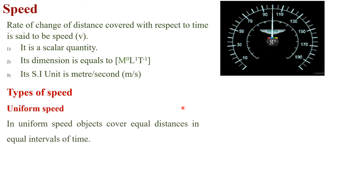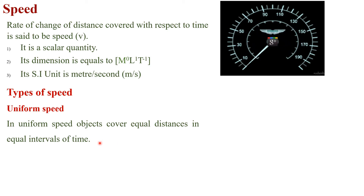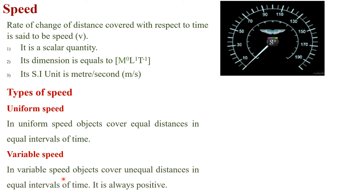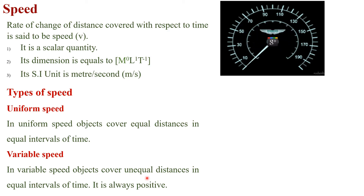Types of speed. Uniform speed: objects cover equal distances in equal intervals of time — when we calculate speed and in equal intervals of time we get equal distances, we call it uniform speed. Variable speed: objects cover unequal distances in equal intervals of time. Speed is always positive. When an object covers unequal distances in equal intervals of time, we get variable speed.